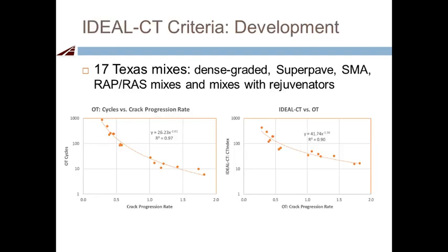With these field validations confirming sensitivity to mix characteristics, repeatability, and good correlation with both established lab tests and field performance, the next step is to establish criteria. Using 17 Texas mixes including dense-grade, SMA, SSMA, reference mixes, and mixes with rejuvenators, we showed strong correlation between CT Index and both OT cycles and TxDOT's new crack progression rate (R² = 0.9).